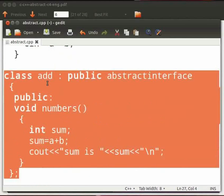This is a derived class named add. It inherits the properties of the base class Abstract interface. Here we override the function numbers. In this we perform the addition of two numbers a and b and store the result in integer variable sum. Then we print the result.